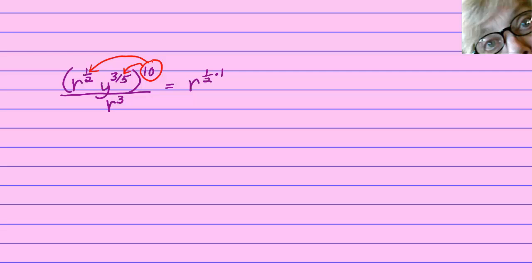So we're going to have r to the one-half times ten multiplied by y to the three-fifths times ten over r to the third. r to the third stays r to the third. It's not in the parentheses.